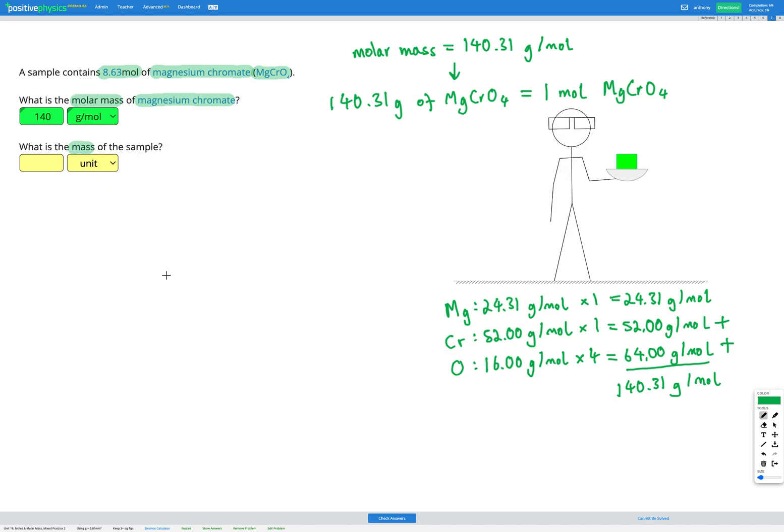So we're starting with the moles. We've got 8.63 moles. And we're converting that into mass. So we want to cancel out the moles, so we're going to have moles on the bottom. We want to end up with mass, so we're going to have grams on the top.